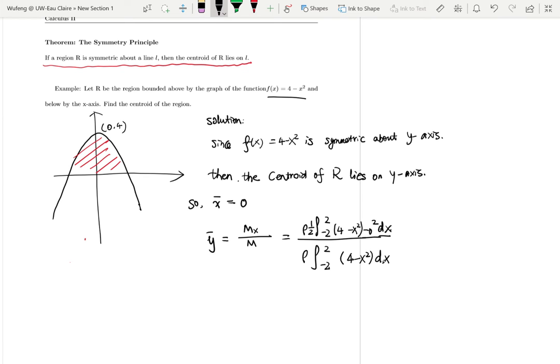So then we find out the total mass on the bottom. If you take the antiderivative, which gives you that is 32 over 3 rho.